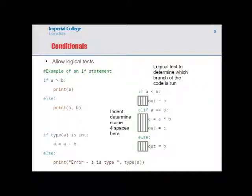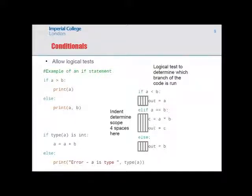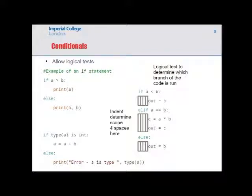Conditionals allow you to do logical tests that determine which branch of code to run. The syntax in Python uses no brackets, just a colon and an indent. For example, if A is greater than B it will print A; otherwise it will print A and B together. Conditionals are important for building up different functionality in scripts and functions with more involved logic.